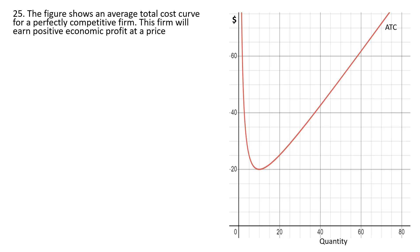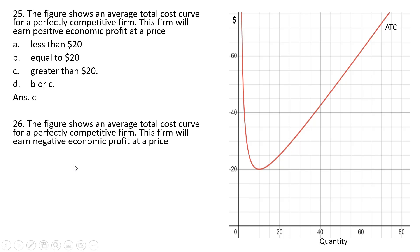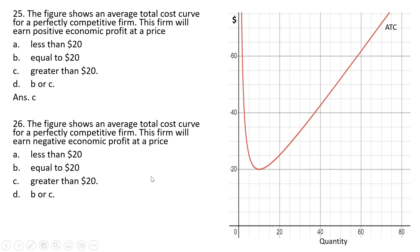Question 25: with an average total cost curve for a perfectly competitive firm, this firm will earn positive economic profit at any price greater than $20—greater than the minimum point on the average total cost curve. Answer choice C. Question 26: the firm earns negative economic profit anytime the price falls below the minimum point of the average total cost curve. Answer choice A is correct.